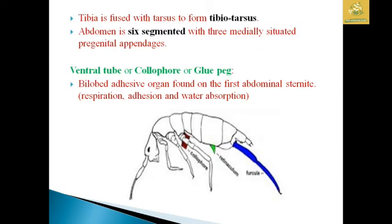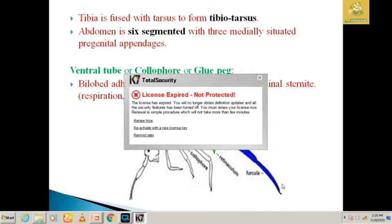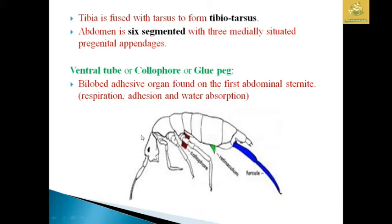The tibia is fused with the tarsus to form a tibiotarsus. The abdomen is 6-segmented and three medially situated pregenital appendages are present. The ventral tube, also called the collophore or glue peg, is a bilobed adhesive organ found on the first abdominal sternite, used for respiration, adhesion, and water absorption.